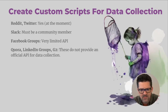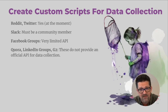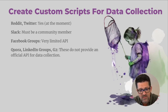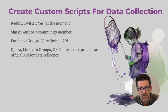Some other thoughts on data collection: Reddit and Twitter currently do allow you to access their API, which makes it fairly easy to collect data from those. Slack — you must be a community member to do that. Facebook groups have a very limited API, so I wouldn't really mess around with that. Quora, LinkedIn groups, and G2 do not provide an official API for data collection, so you might want to look at tools like Octoparse for those.